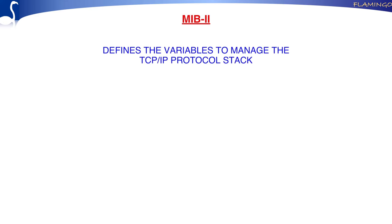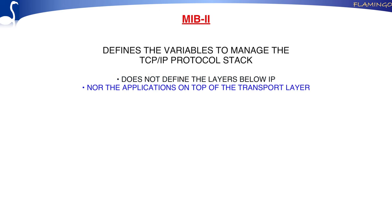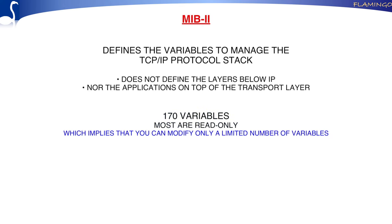The MIB-2 looks at management of the variables that relate to the TCP/IP protocol stack. It does not look at the things below IP, so it doesn't look at Ethernet, and it doesn't look higher to all kinds of applications. If you count the number of variables, you get about 170 variables, most of them being read-only. So you can read a lot of stuff, but you cannot change a lot of things.